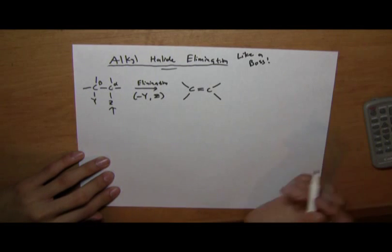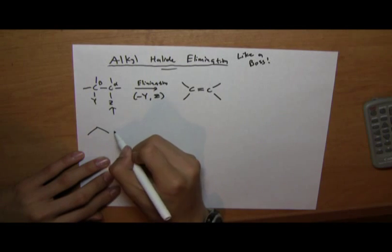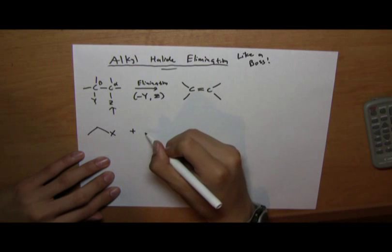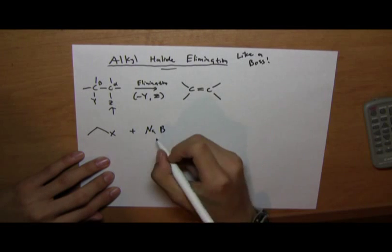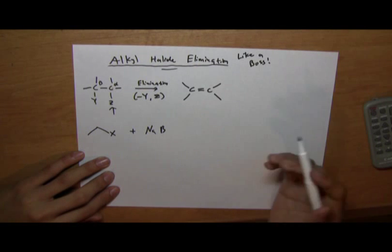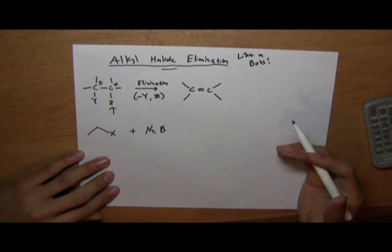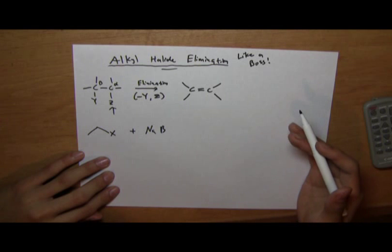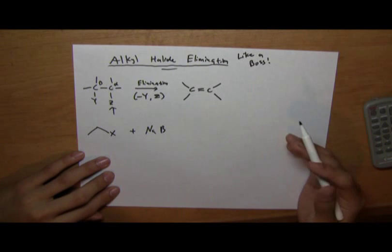So we have this molecule and NaB, where this is a base. So the rank, primary, secondary, or tertiary of the alpha carbon, and the type of base determines whether elimination or substitution will occur.